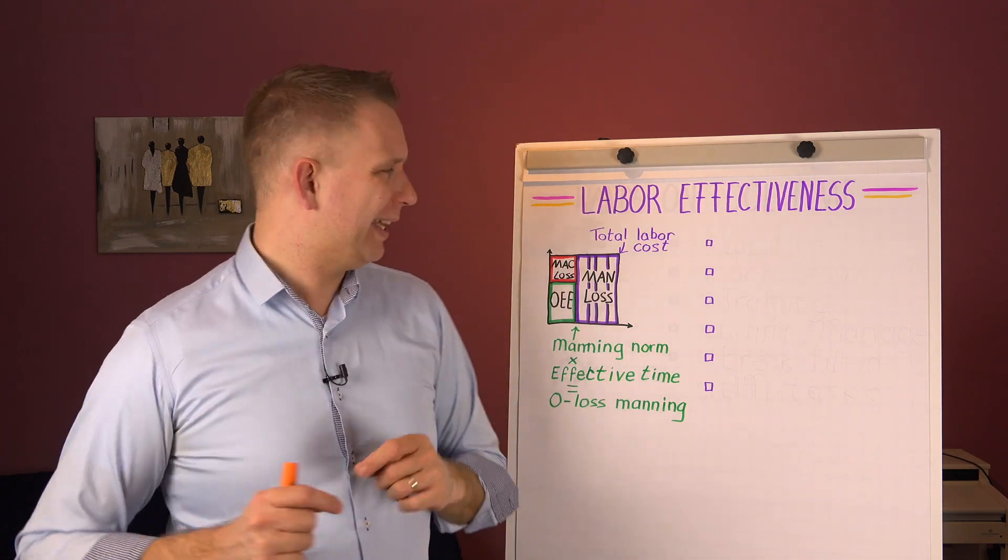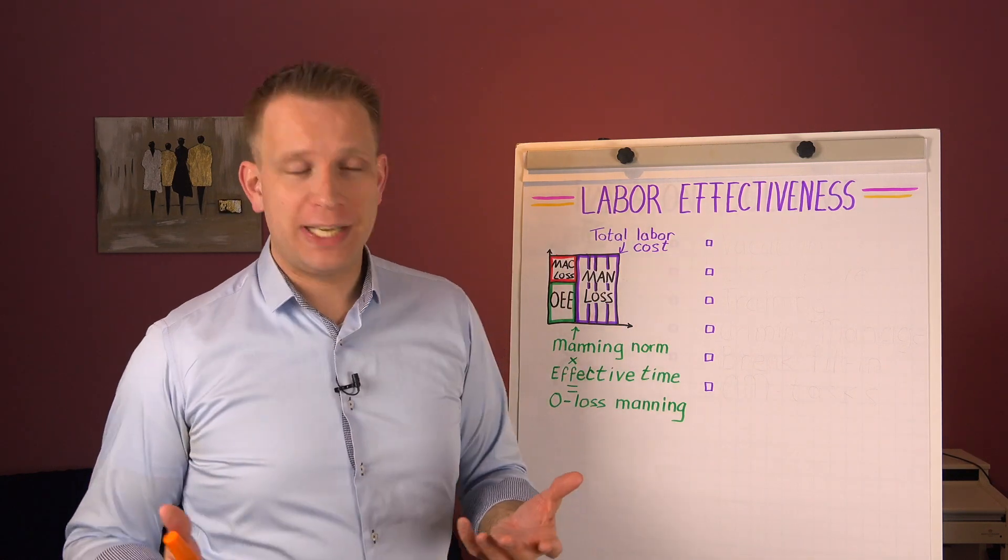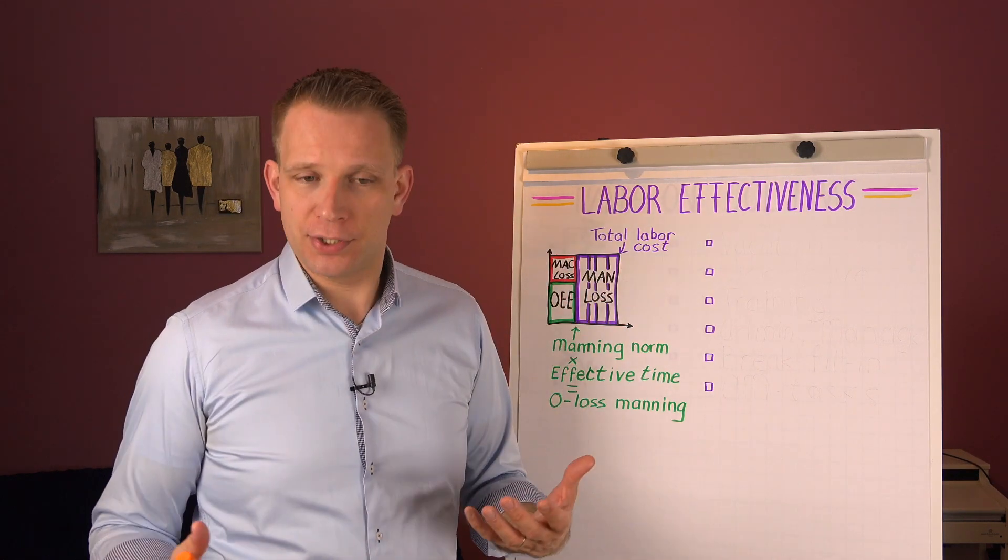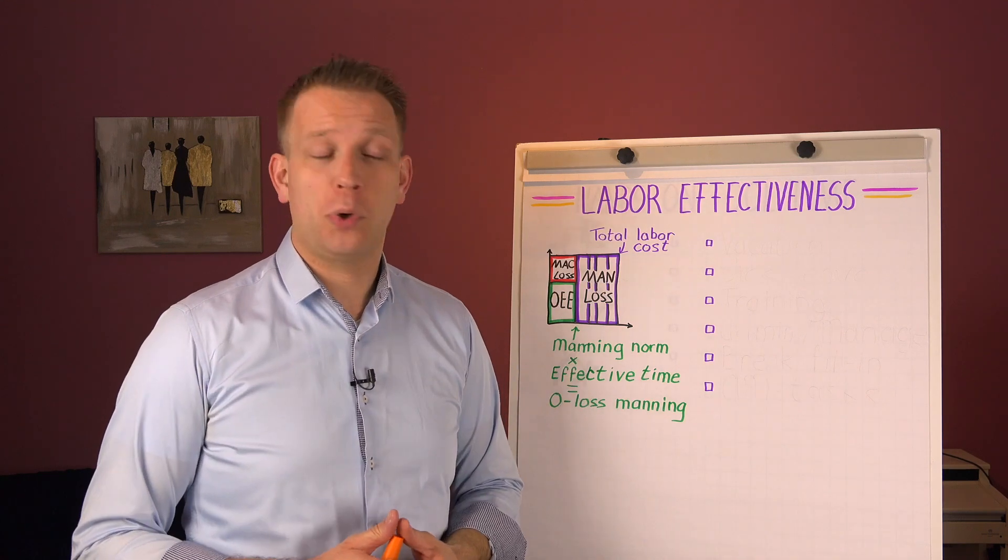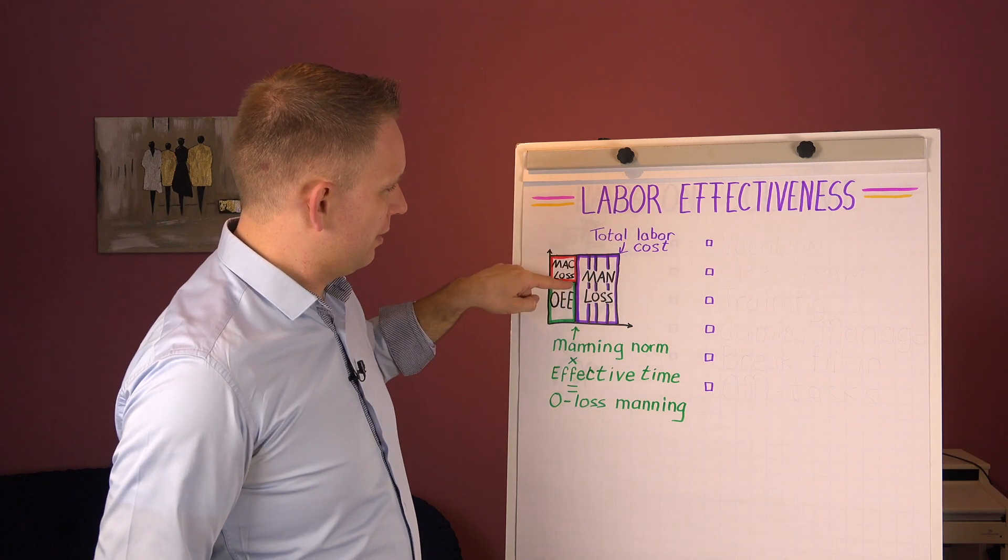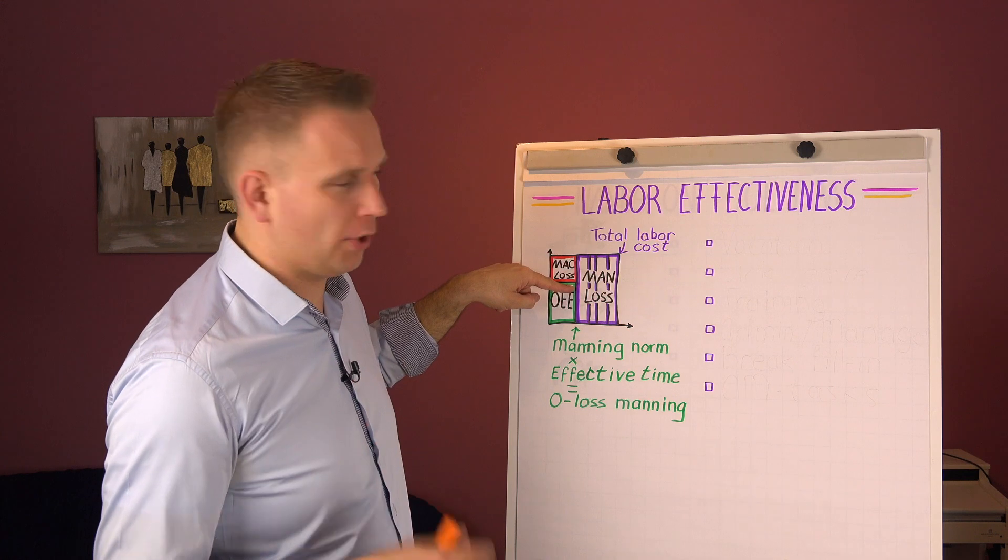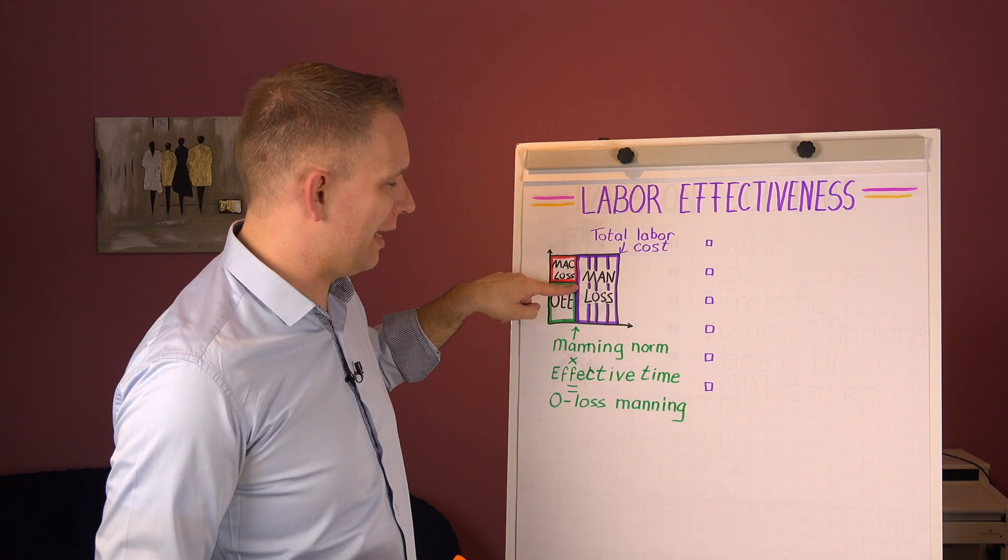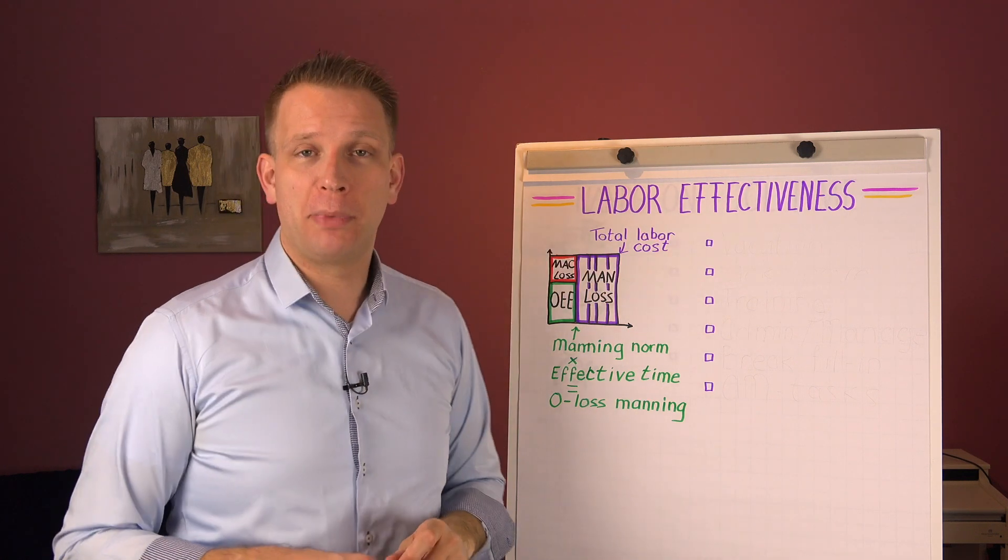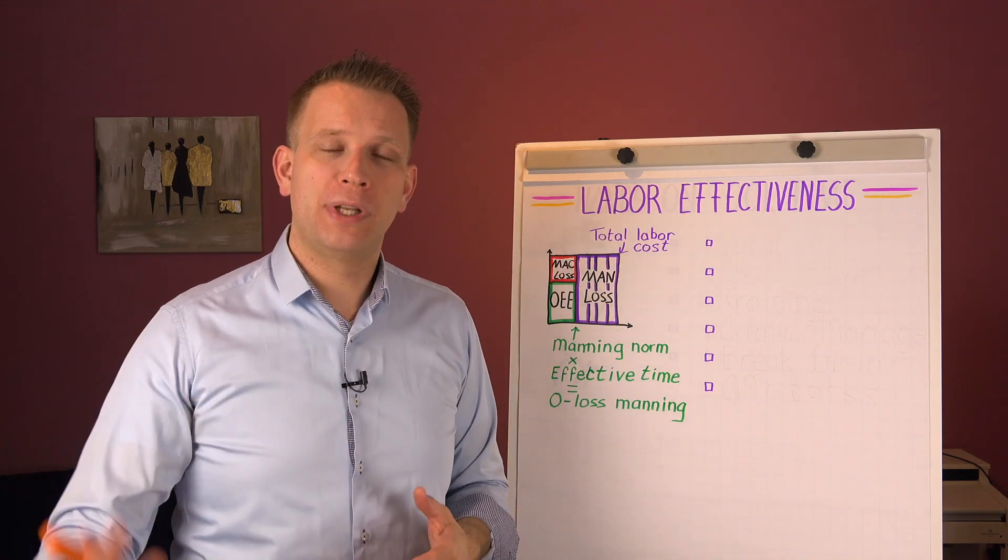Now we compare that to the total labour cost. If we see that this shift, for instance, we had five people walking around, eight hours, so that's 40 hours in total. So we've got our 15 effective hours, or zero loss for Manning, effective man hours were 15, divided by 40. That is a pretty low 30% overall labour effectiveness.